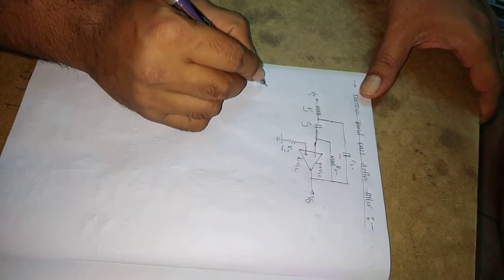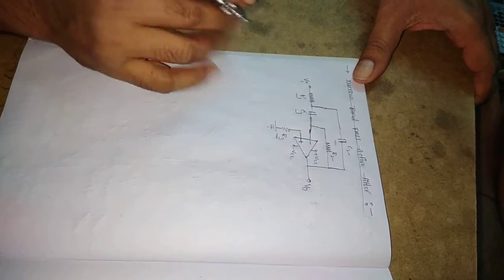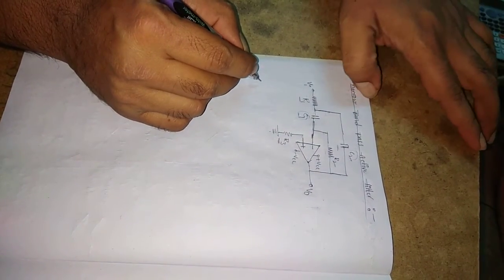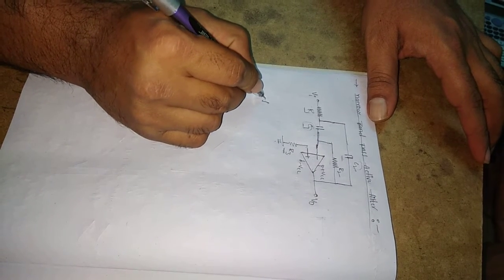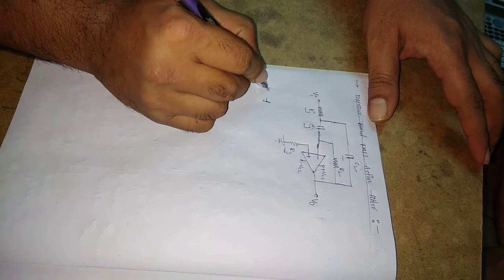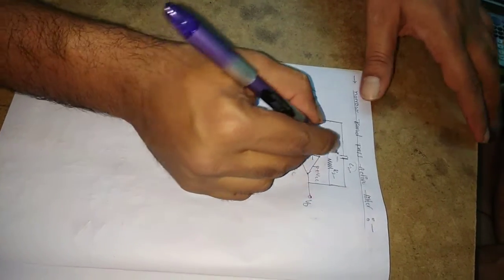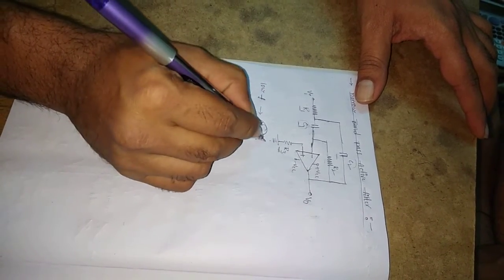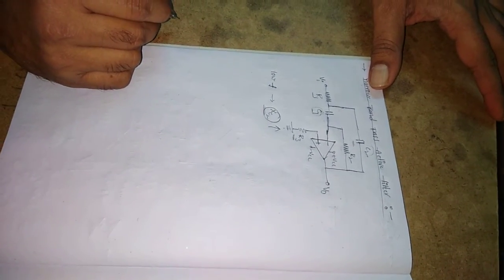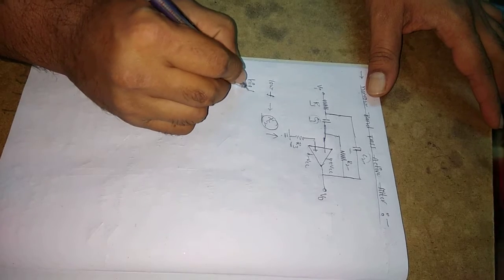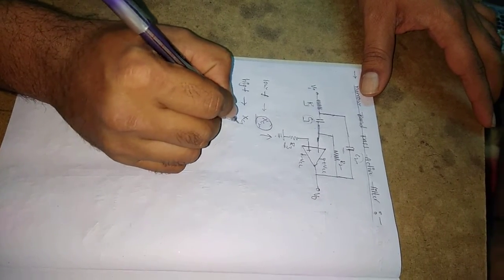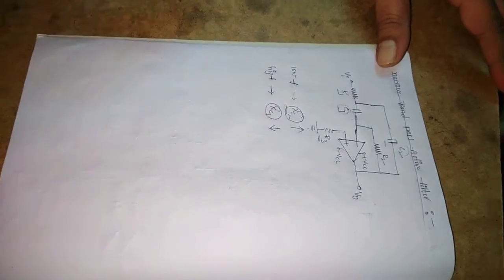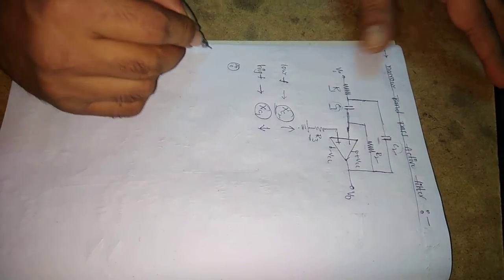We will analyze this circuit in two cases. Before that, we need to select the capacitor values C1 and C2 according to frequency. For low frequency signals, select the reactance of capacitor C2 as a larger value. For high frequency signals, select the reactance of capacitor C1 as a very small value.